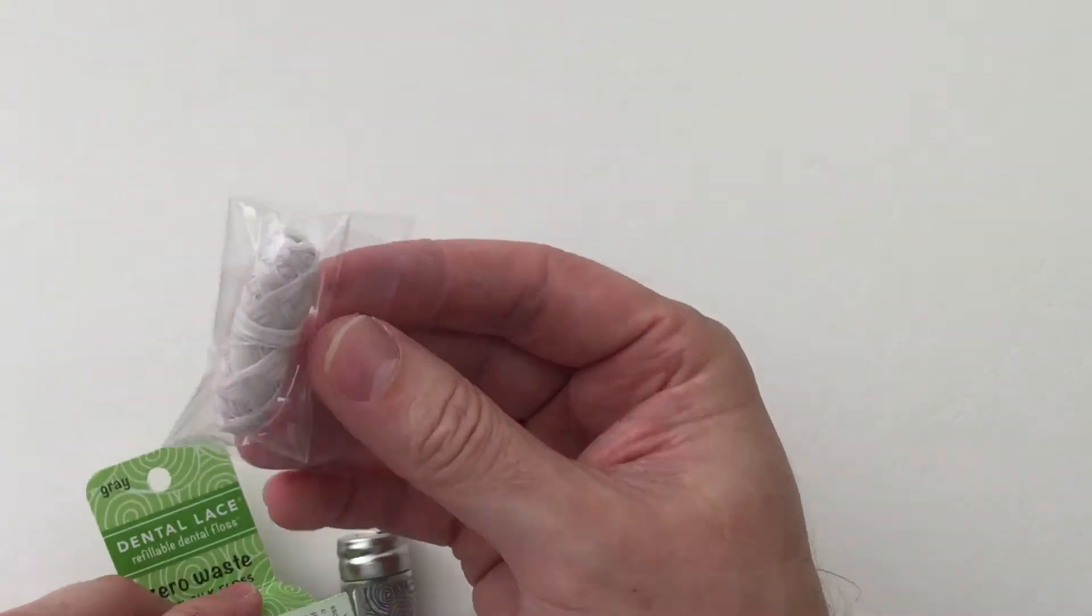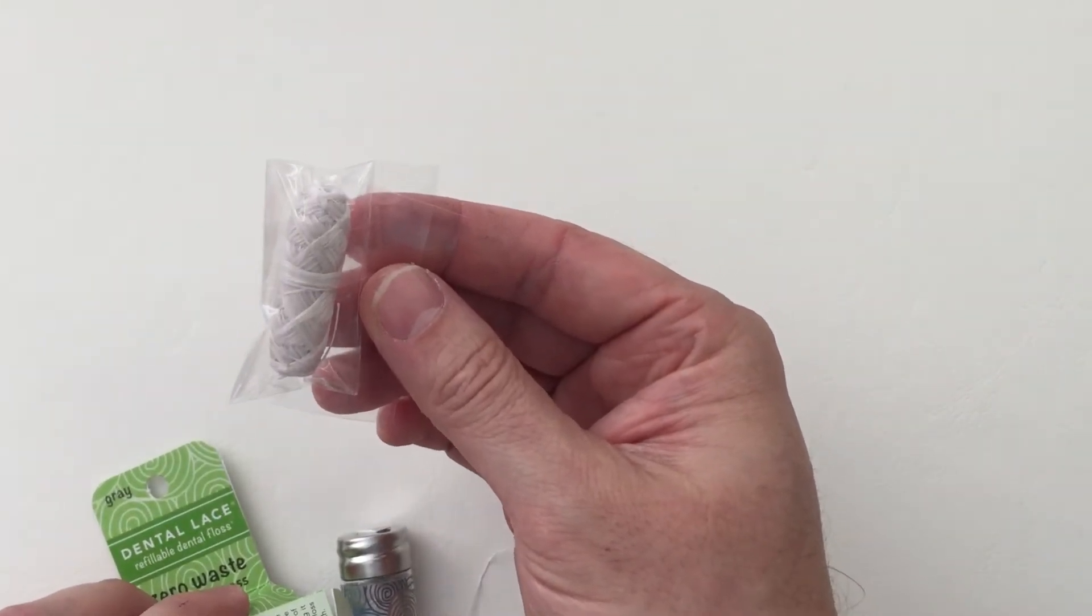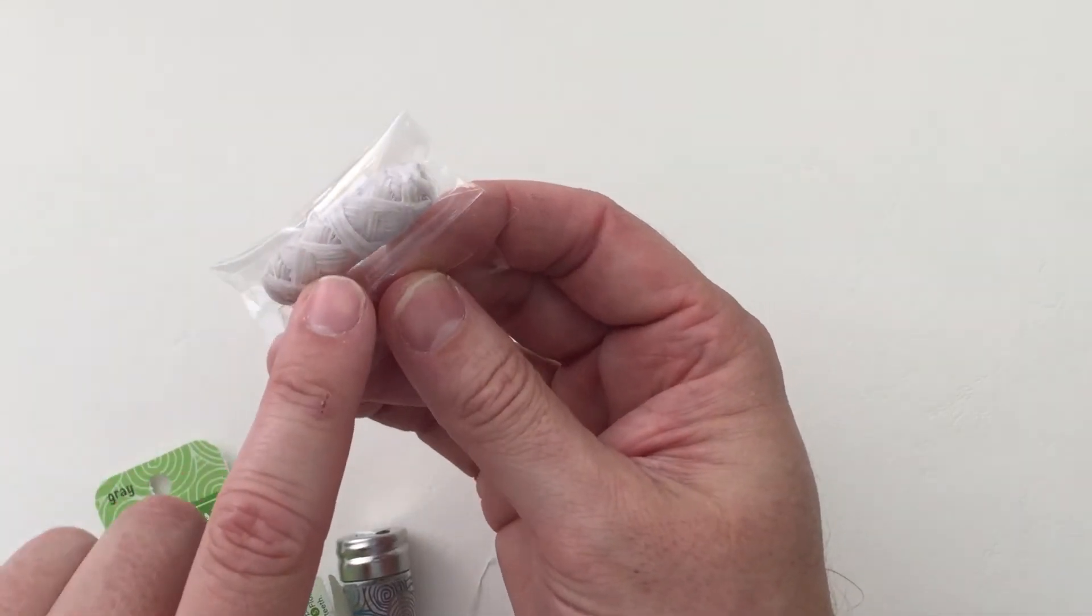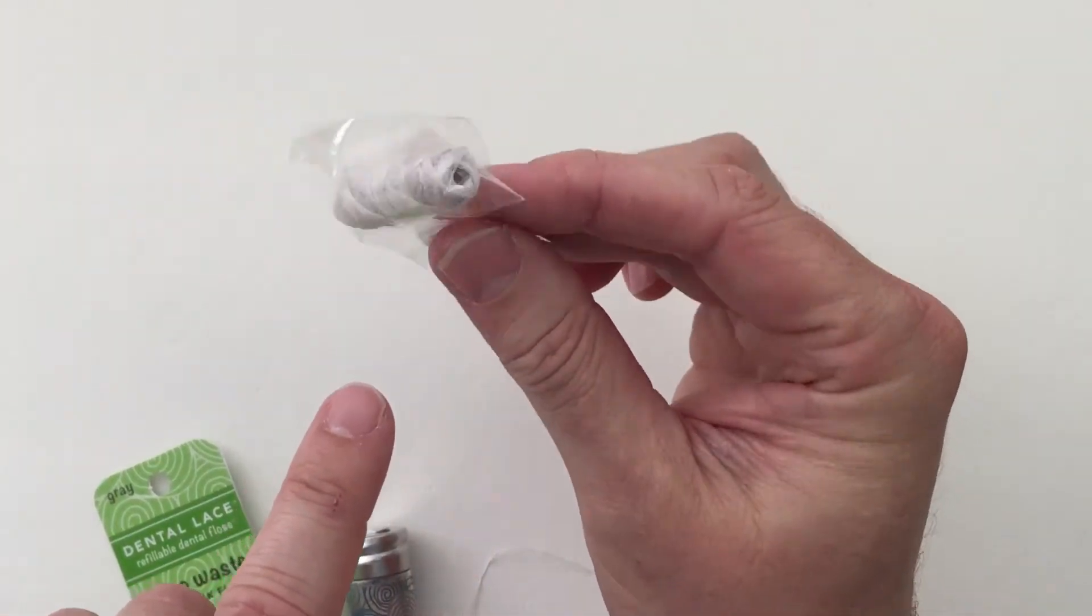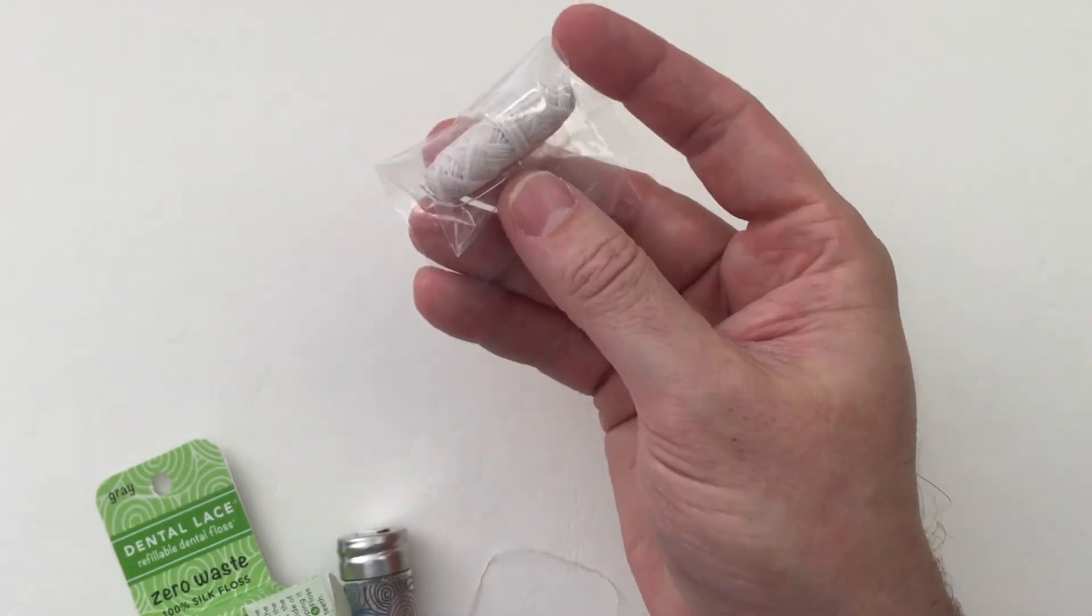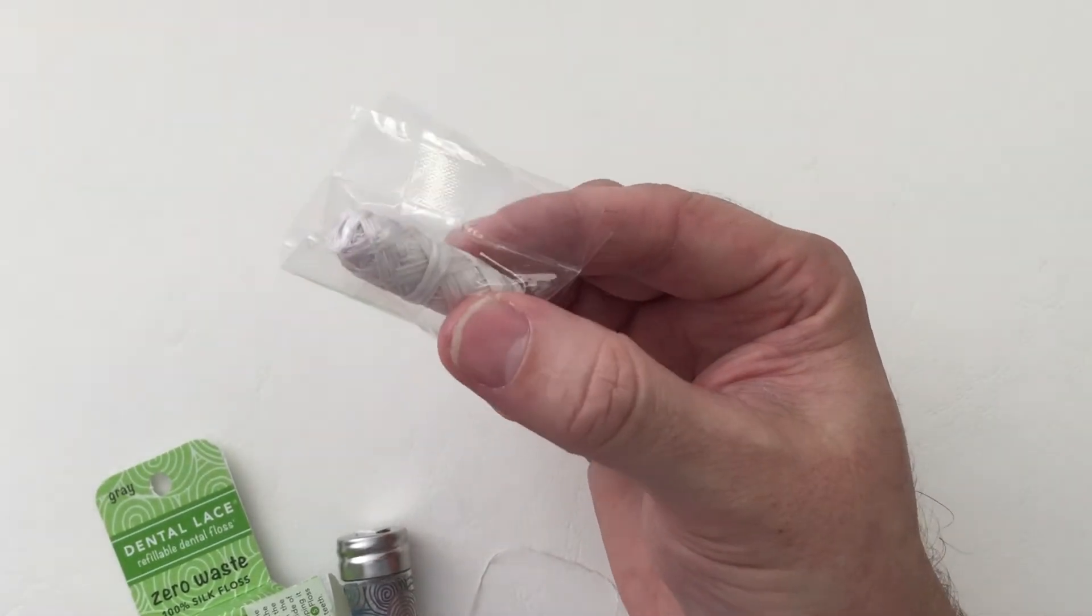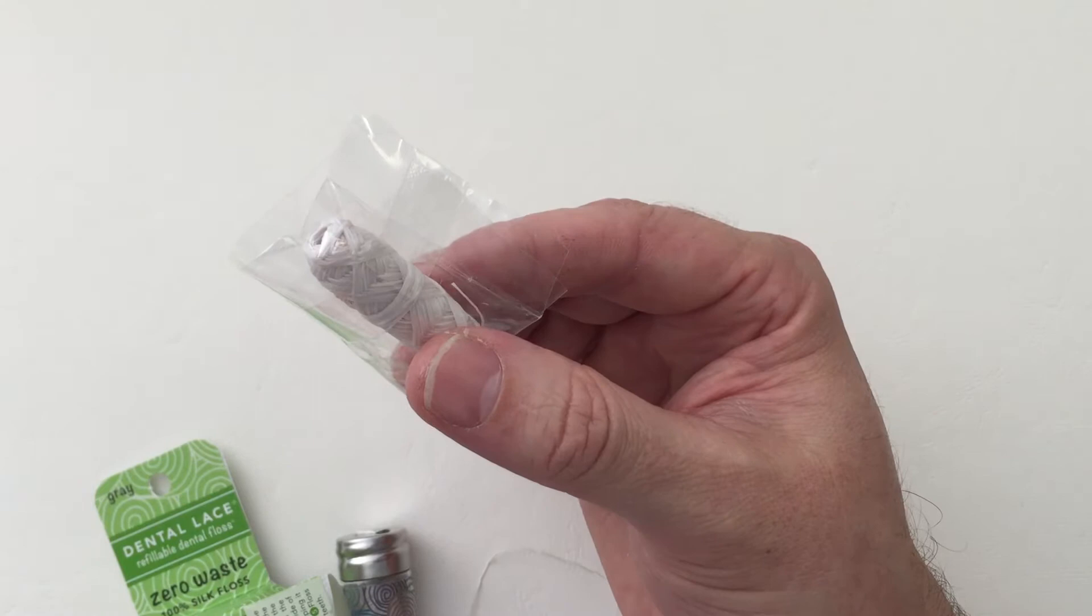You'll get a spare spool of silk floss. You think this is plastic, but it's not. It's completely biodegradable and breaks down—eco-friendly and sustainable.